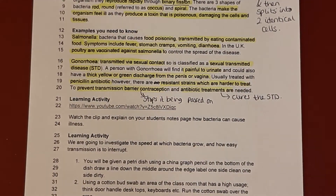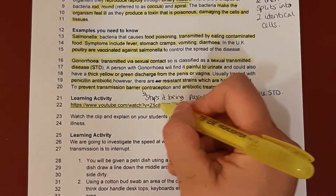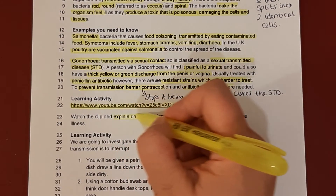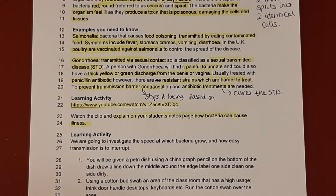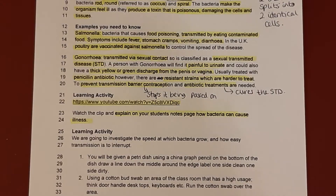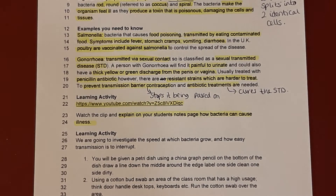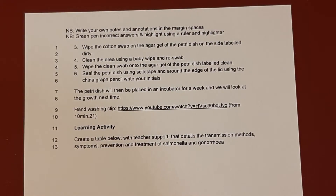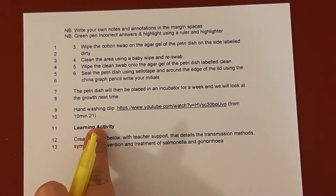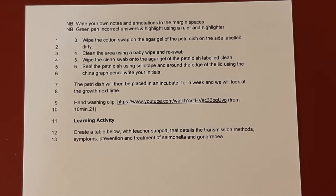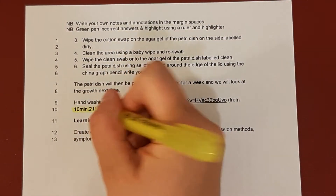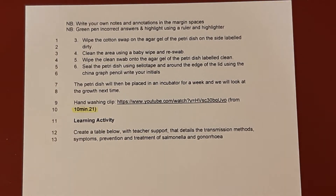There are resistant strains which are harder to treat. Now I'd like you to go to the YouTube video shown here, watch the clip, and then explain in the student notes page how bacteria can cause illness — just a short paragraph, a couple of sentences. Pause the video whilst you do that. There is also a hand washing clip which you don't need to watch since you all know after coronavirus how to wash your hands. If you do go to that clip, be aware it starts at 10 minutes and 21 seconds into the video.